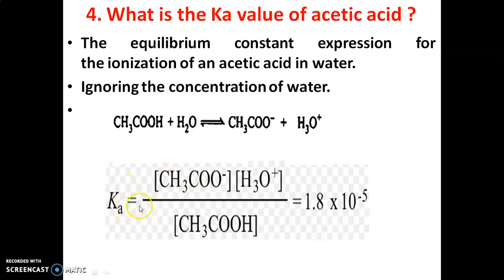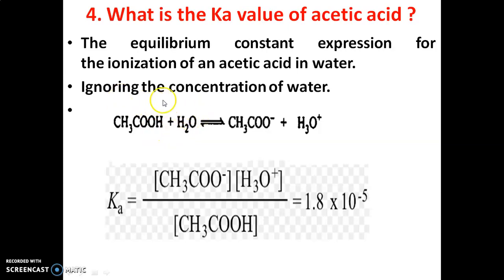K is the ratio of concentration of products divided by concentration of reactants. In this case, the products are CH₃COO⁻ and H₃O⁺, and the reactant is acetic acid. We ignore the concentration of water. Therefore, Ka = [CH₃COO⁻][H⁺] / [CH₃COOH] = 1.8 × 10⁻⁵.